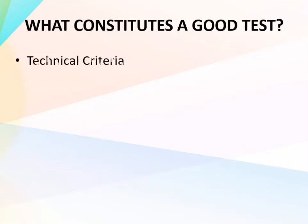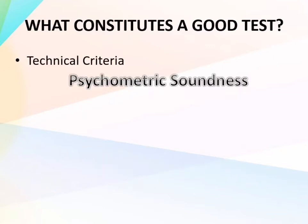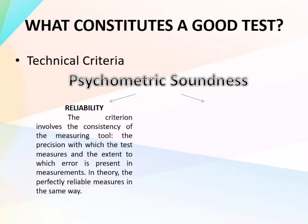The next criteria are technical criteria. Under technical criteria, we have psychometric soundness. First, we have reliability — this criterion involves the consistency of the measuring tool, the precision with which the test measures, and the extent to which error is present in the measurements. A perfectly reliable test measures the same way consistently. When we talk about reliability, it concerns the consistency of the measures created by a specific test.